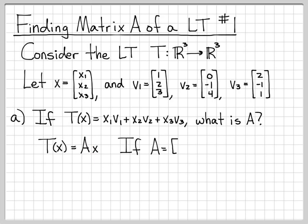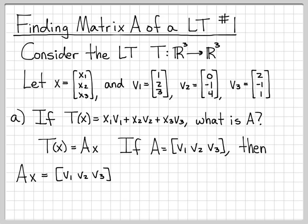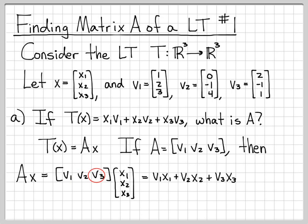Let's take a guess: what if A is the matrix whose columns are v1, v2, and v3 — that is, v1 is the first column, v2 is the second column, and v3 is the third column? Then A·x = [v1 v2 v3]·x. By matrix-vector multiplication, each entry of x multiplies the corresponding column of A, giving x1·v1 + x2·v2 + x3·v3.